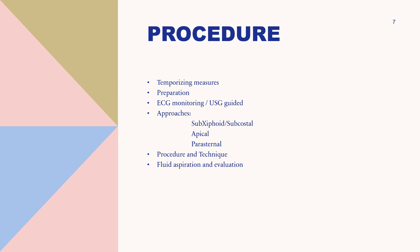Inadvertent puncture of the lungs is also prevented with this approach because air in the lungs will not conduct sound waves and will prevent visualization of the heart when located immediately beneath the probe. Avoid choosing a site that could puncture the internal mammary artery, which lies 3 to 5 cm from either parasternal border, and avoid neurovascular bundles at the lower border of the rib. Mark the site with a sterile marker.